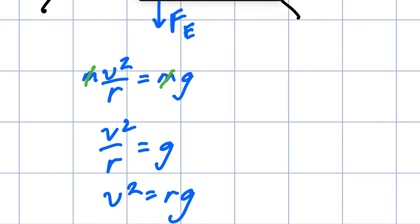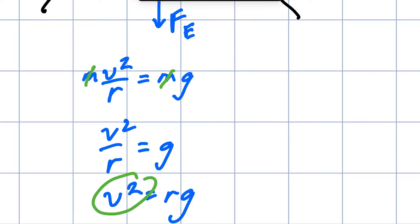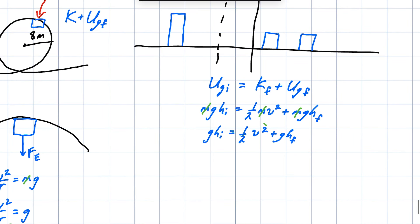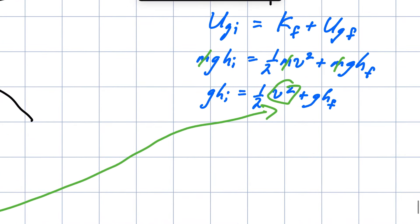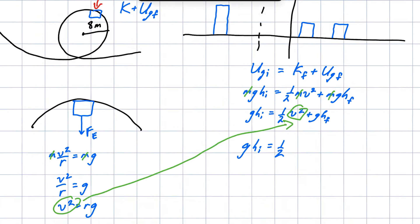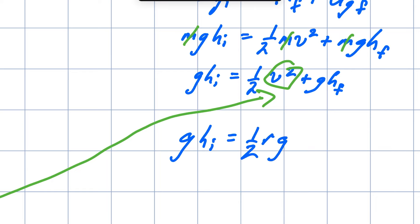Now this is really handy because look I've got V squared. I also have this V squared up here and so I can substitute in for this and watch what happens. GHI equals one half. Now instead of V squared I'm going to put in RG. RG plus GHF. Now look again. Every term has a G in it so I'm going to divide everything by G and all the G's go away. So now HI, the initial height, is equal to one half R plus the final height.